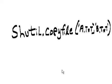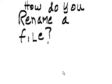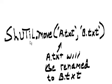How do you copy a file? shutil.copyfile('a.txt', 'b.txt'). How do you rename a file? shutil.move('a.txt', 'b.txt') — here a.txt will be renamed to b.txt.